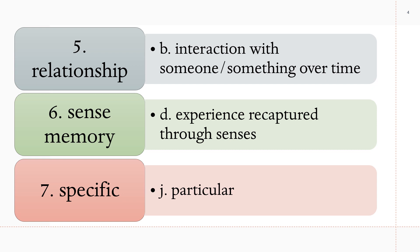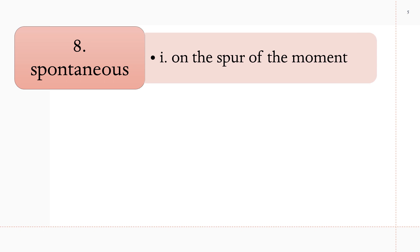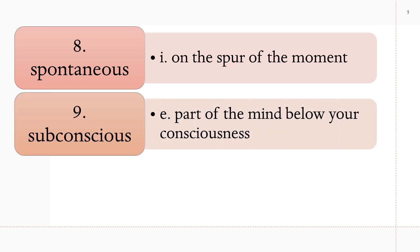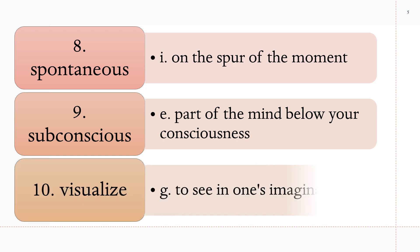Number 7: Specific is J — Particular. Number 8: Spontaneous is I — on the spur of the moment. Number 9: Subconscious is E — part of the mind below your consciousness. Number 10: Visualize is G — to see in one's imagination.